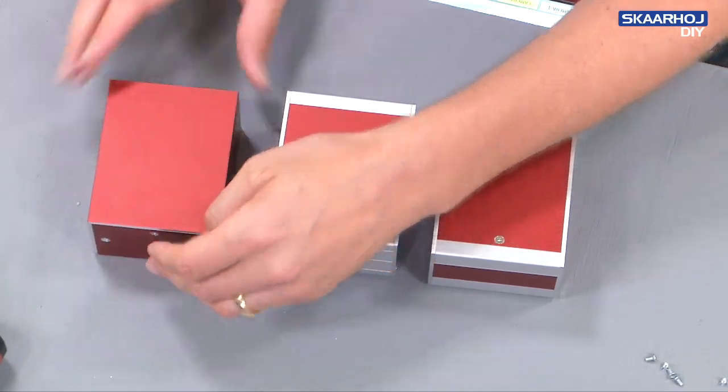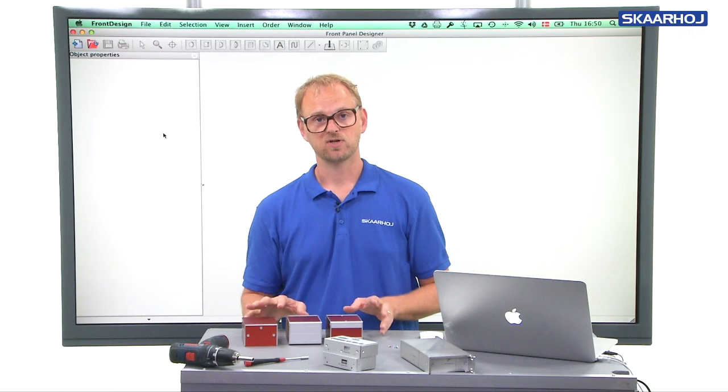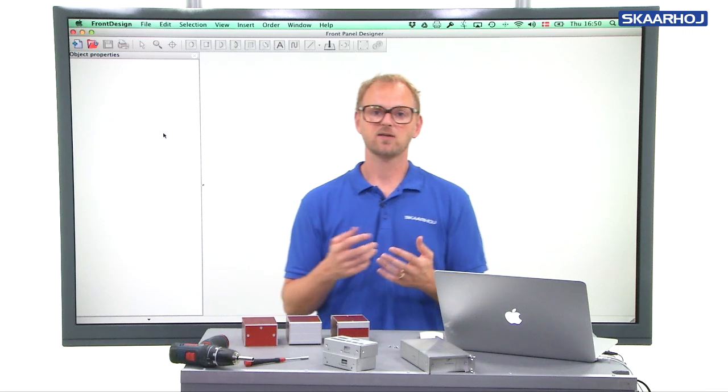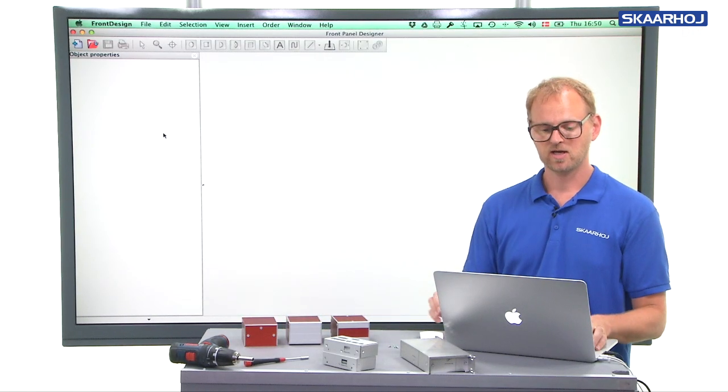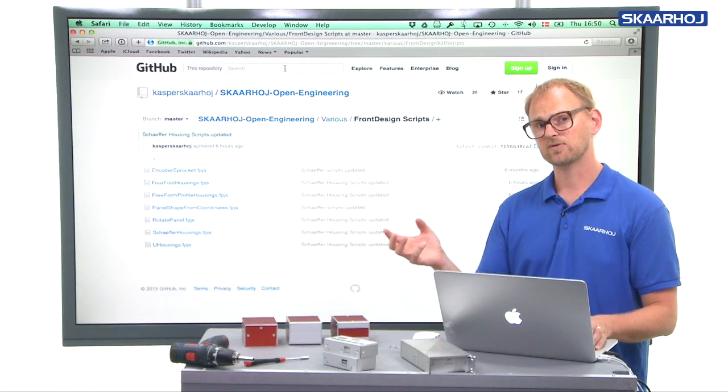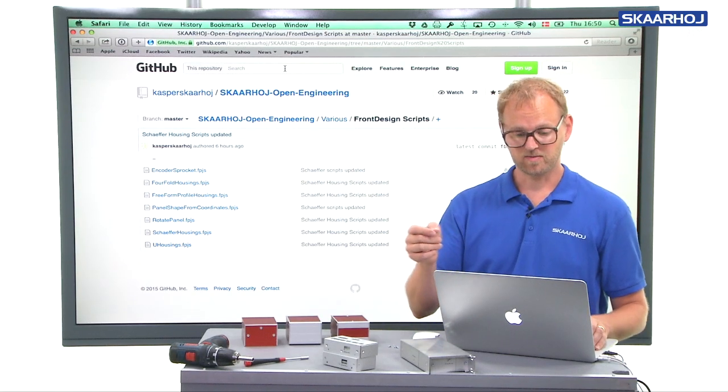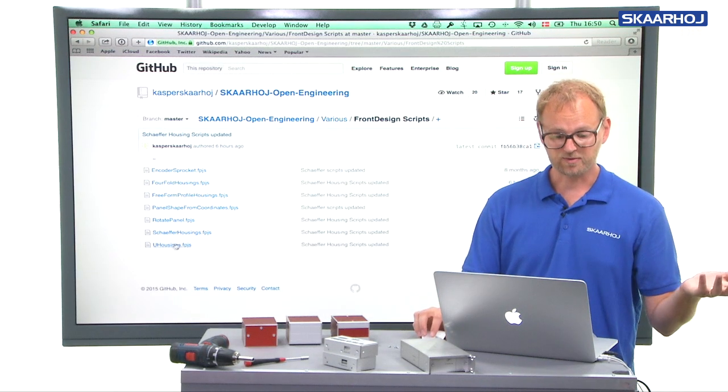So that's some of the features. But what we should take a look at now is how did we actually create this box from the script. And just like with the Schaffer housings script that can create housings according to the Schaffer housing assembly manual, we also have scripts for this and that script is called U housings.